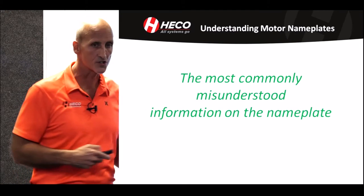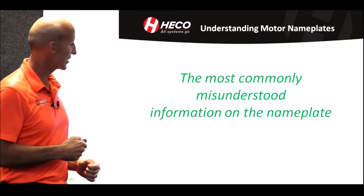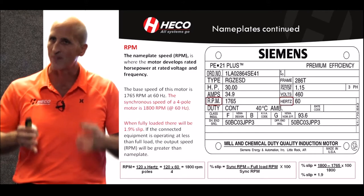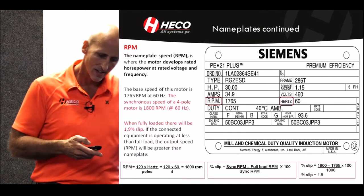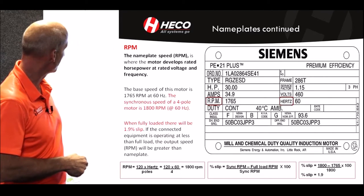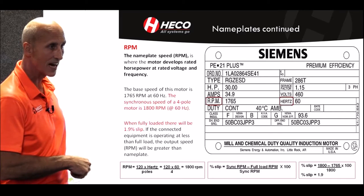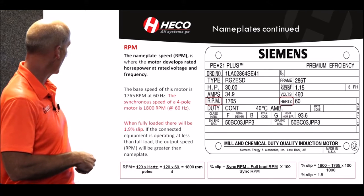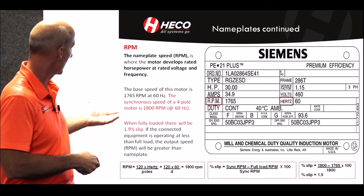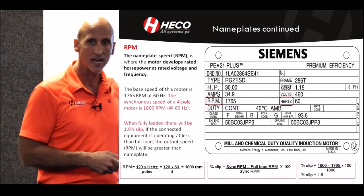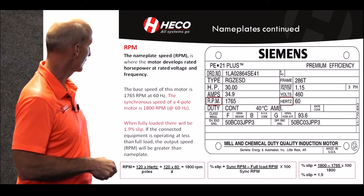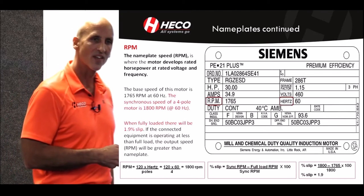The most commonly misunderstood item on the nameplate: the nameplate is interesting because there's a lot of information there, and a lot of people don't understand what the information really says—and then maybe misapply the motor. The RPM is defined by this formula: 120 times the frequency. At 60 hertz with a four-pole machine, that gives you 1,800 RPM—that's the synchronous RPM. To calculate what the slip RPM is, you have to use the other formula.